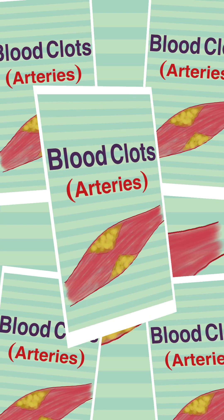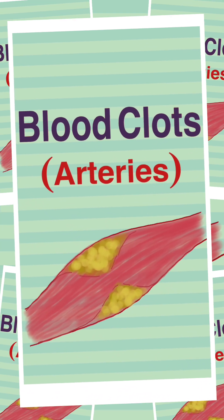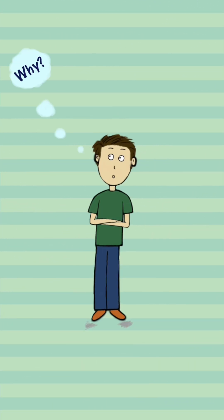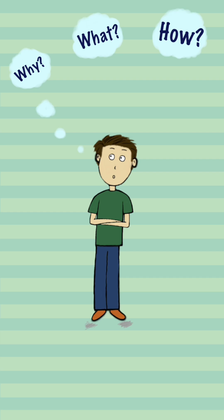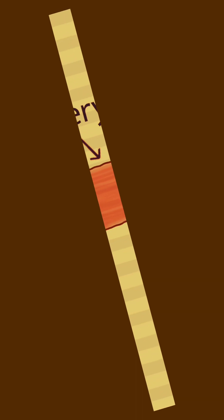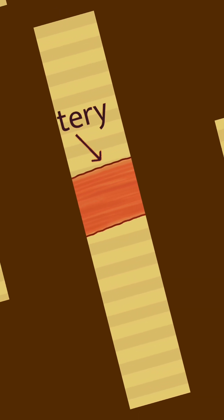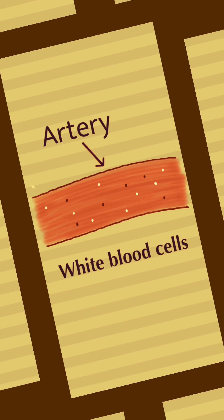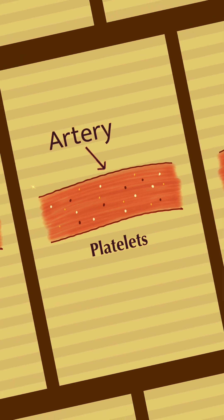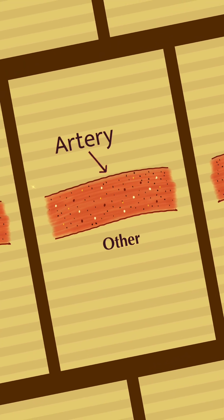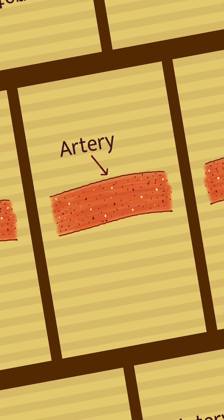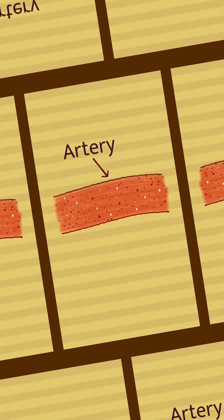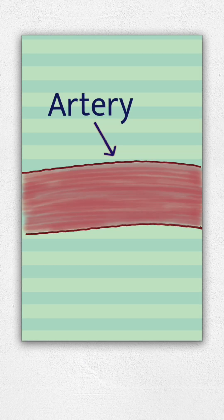Blood clots, specifically in arteries — why does it happen, what causes it, and how do we stop it? Arteries in your body are tube systems that carry things like red blood cells, white blood cells, platelets, and a bunch of other stuff to their destinations and other parts of the body.